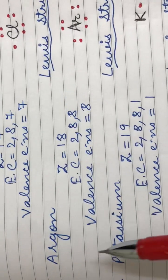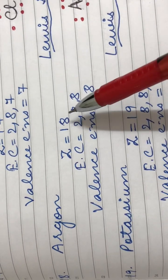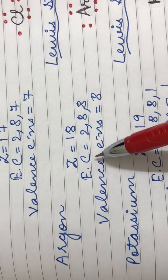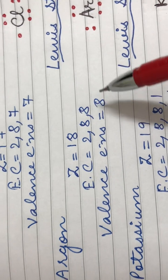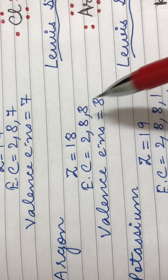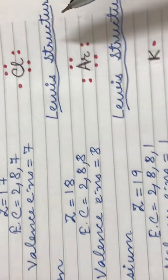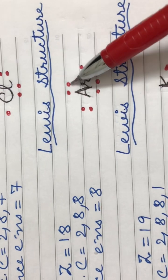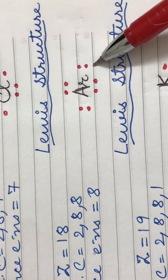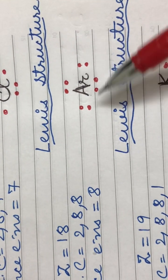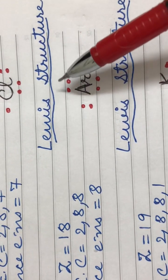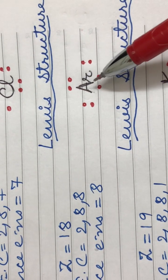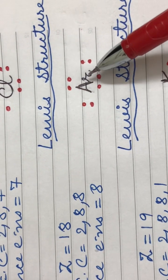Coming to the next element, argon. Its atomic number is eighteen. Its electronic configuration is 2,8,8 and it has eight electrons in its valence shell. Therefore, the Lewis structure for argon is its symbol Ar with eight dots placed in pairs around the symbol.